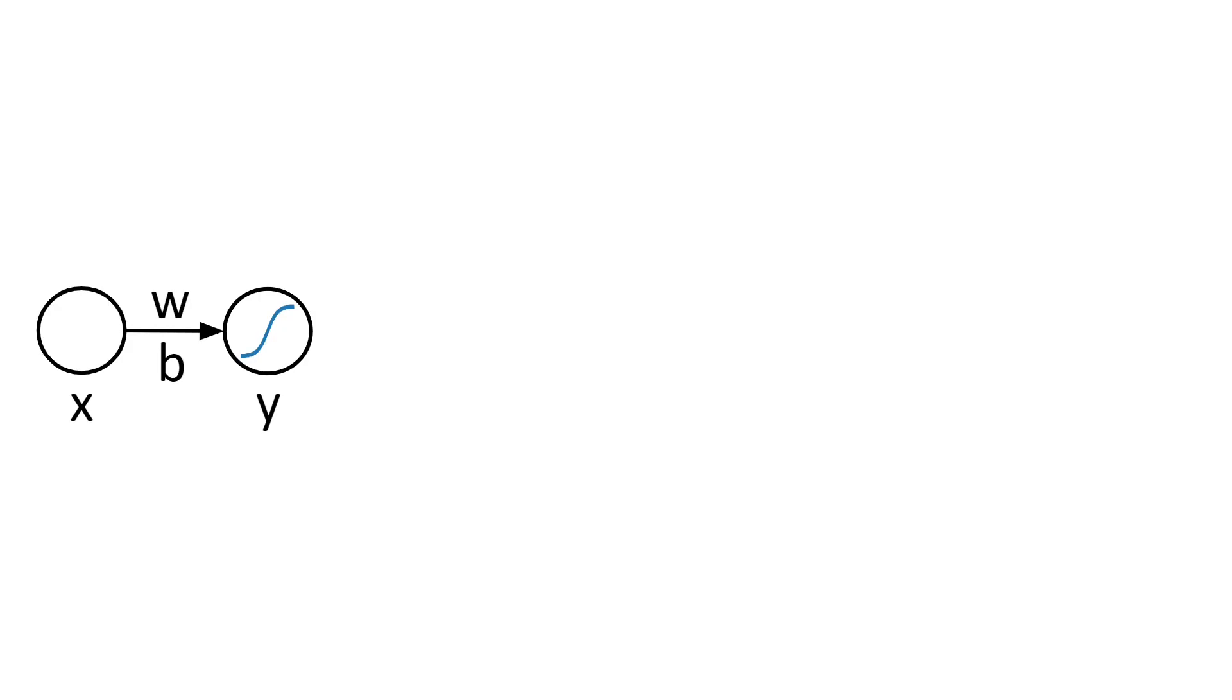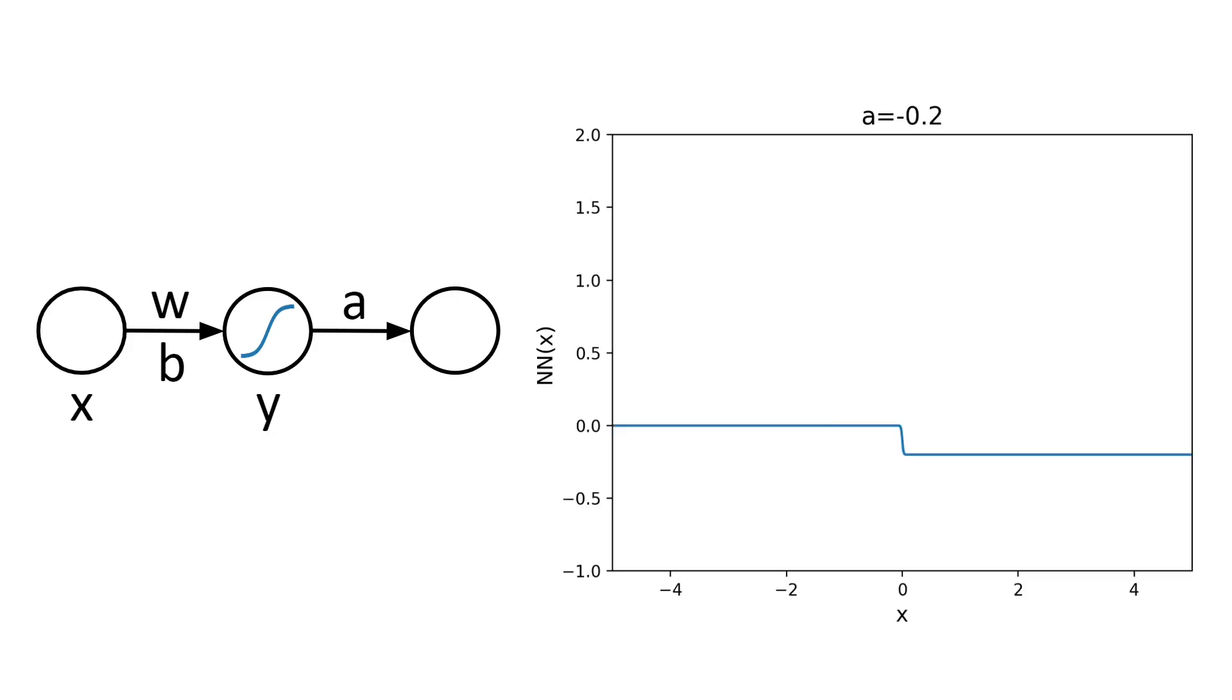However, for neural networks to be able to approximate functions, another building block must be added. Namely, to add another neuron with its weight a on top of y. The role of this neuron is to say how big of a step to take, and you can see this behavior on the right image.